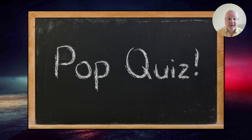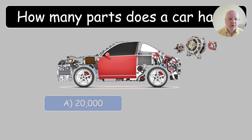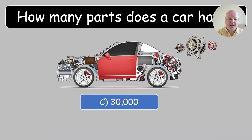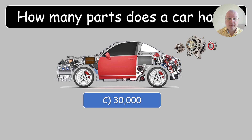For example, what you're seeing right now is a quiz where I introduce an interesting fact. The question is: 'How many parts does a car have?' Students don't really know the answer — I had to Google it myself. They guess in pairs which choice is correct. In this case, it's 30,000: a car has 30,000 parts. Using a quiz this way helps your students remember this interesting fact.